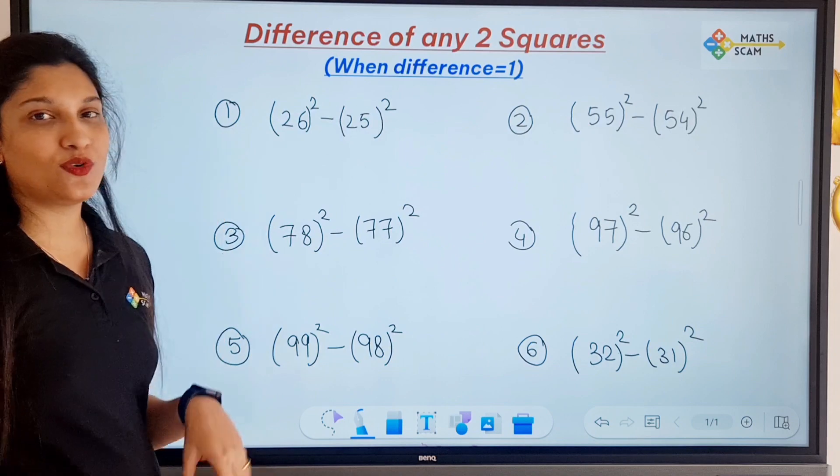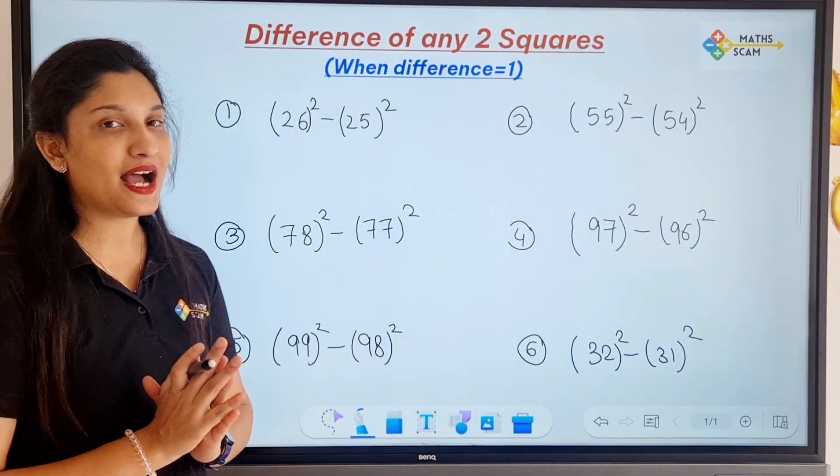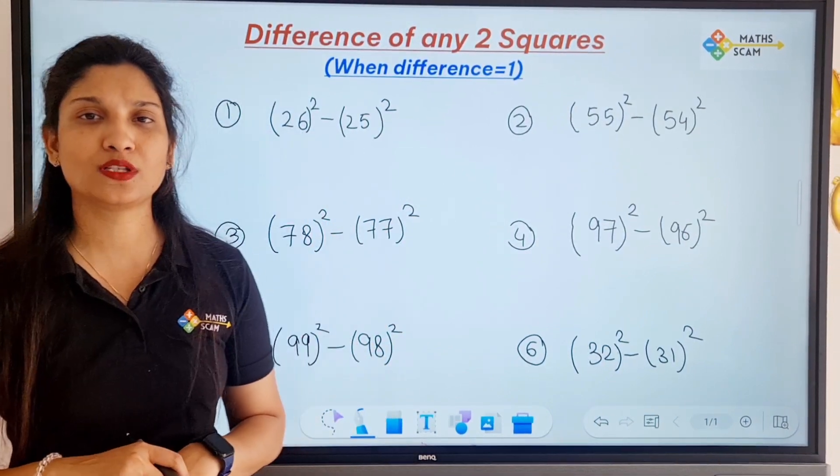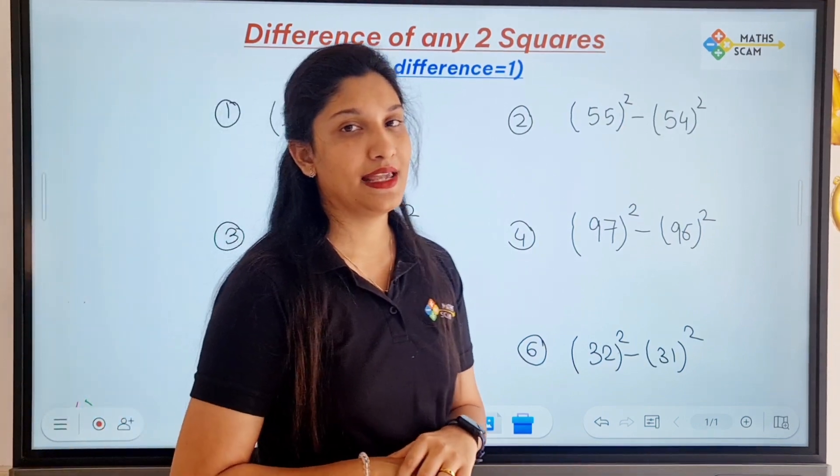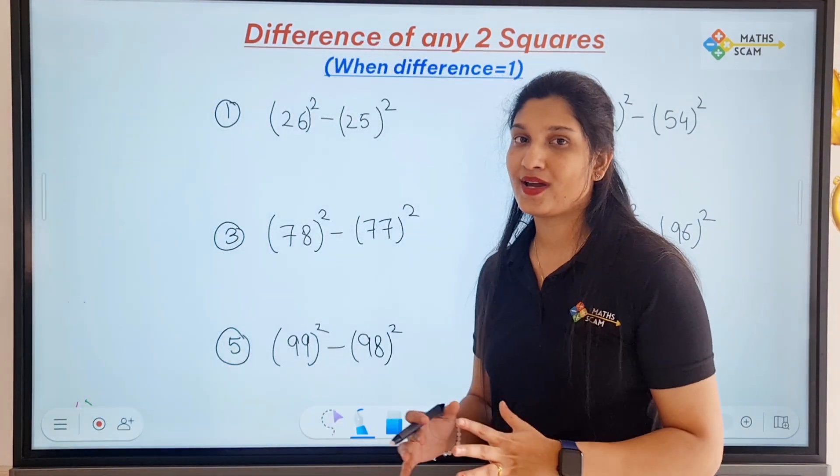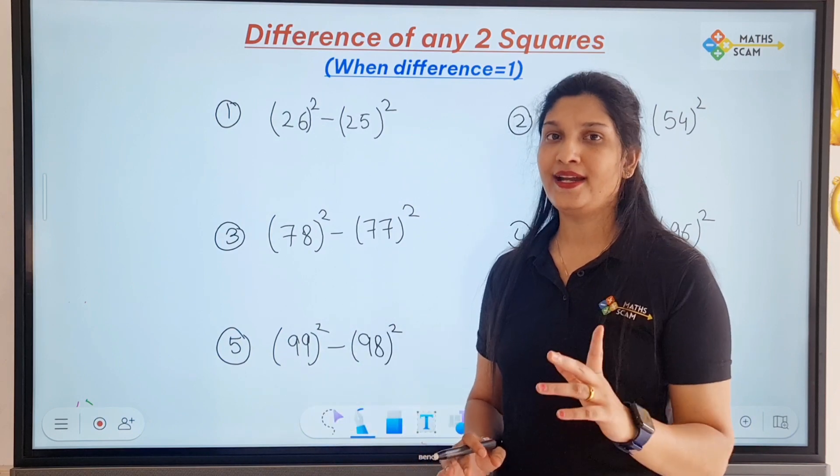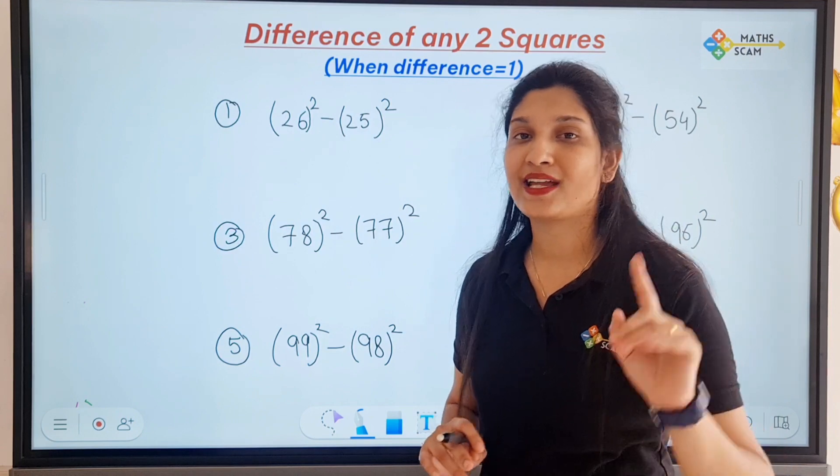The first question is 26² minus 25². If you want to solve it by traditional methods, pause the video and solve it by your method. How would you solve it? You would calculate 26², calculate 25², and then subtract them, right? This is your method. Pause and solve, see how much time it takes.